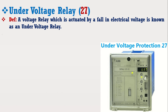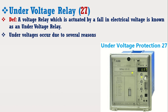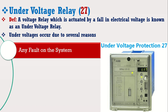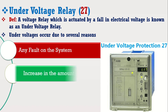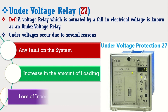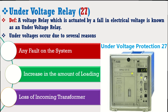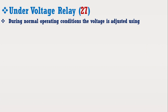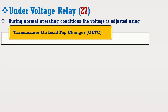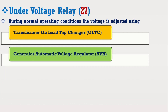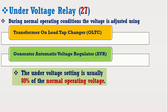Undervoltages occur due to several reasons like any fault on the system, increase in the amount of loading, and loss of an incoming transformer. During normal operating conditions, the voltage is adjusted within the acceptable voltage limits by transformer on-load tap changer and generator automatic voltage regulator.